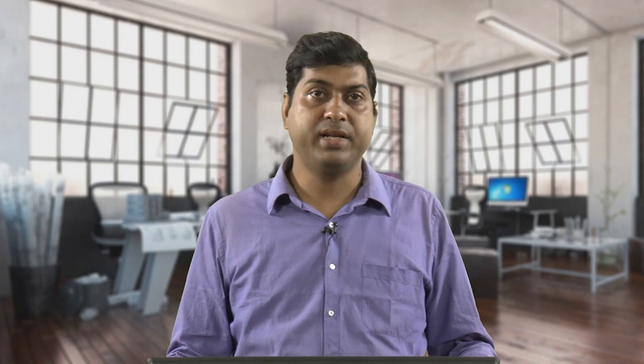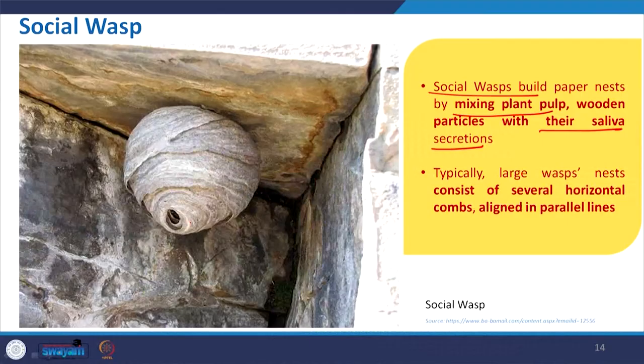They make that material and build it over a period. The outer look is just the envelope, but inside they have different cells. The main purpose of this nest is laying eggs — they wait till the eggs mature and the larvae come out, unlike beehives where storage of honey and pollen is also used. This nest consists of several horizontal combs aligned in parallel lines.